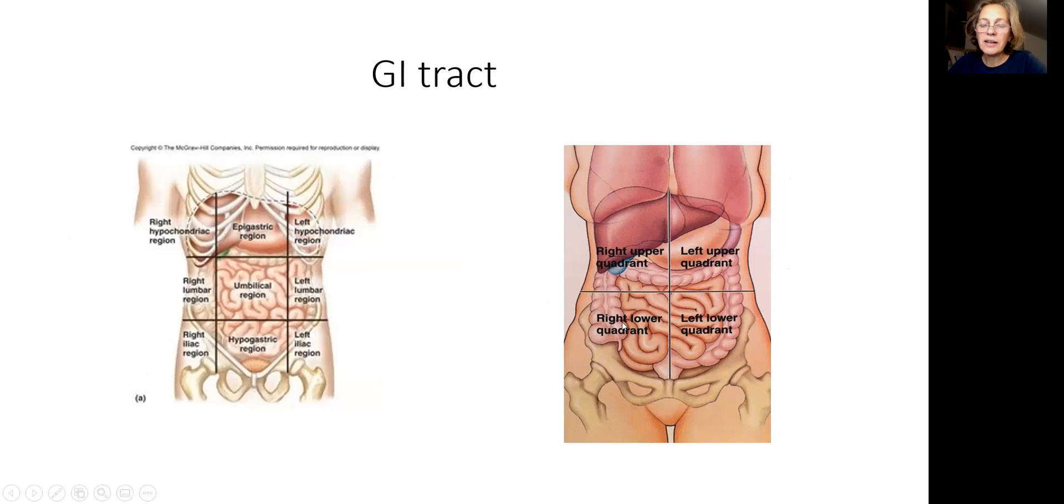If they write right lower quadrant pain, it means that organs that are located here: small intestine, large intestine, ovaries also here, ascending colon.